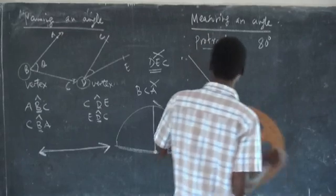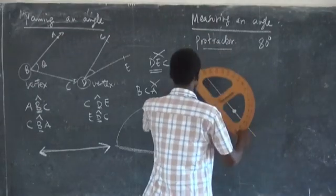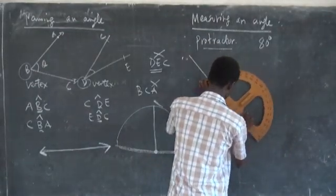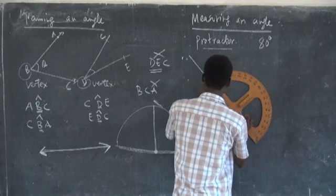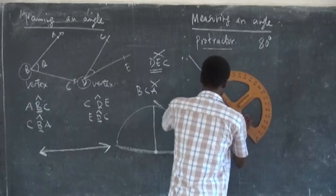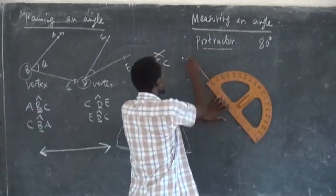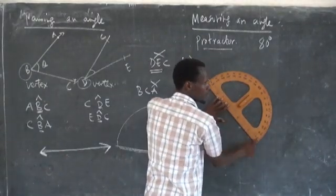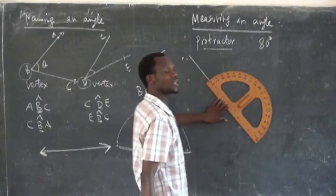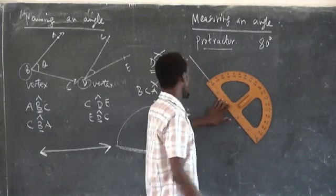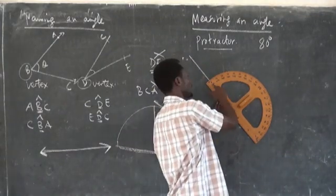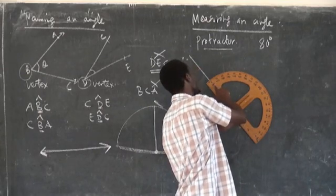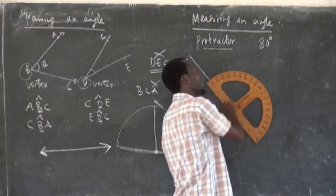How to read it? This is the way it is. Then you put it here. You may see this line goes with this line. Then you start counting from zero. Notice from one hundred and eighty.